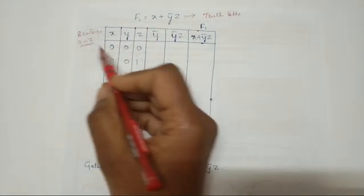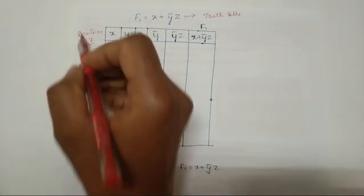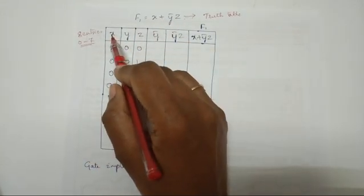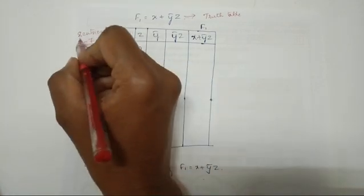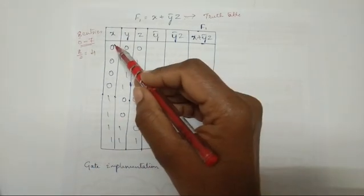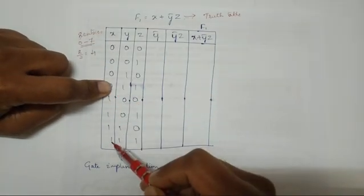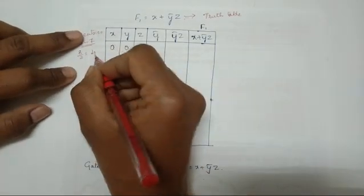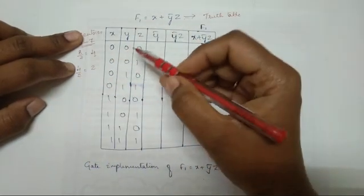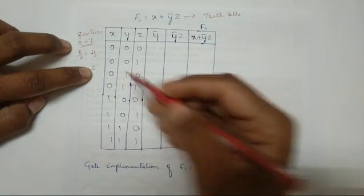Here is a shortcut for filling the truth table. With 8 entries and 3 variables x, y, z: for the x column, divide 8 by 2 to get 4 — write 4 zeros, then 4 ones. For the y column, divide 4 by 2 to get 2 — write 2 zeros, 2 ones, 2 zeros, 2 ones.